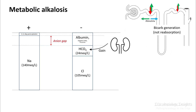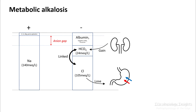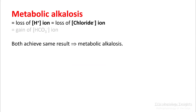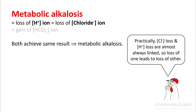Metabolic alkalosis is either gain of a bicarb or loss of chloride, and whenever your body gains a bicarb it loses the chloride and vice versa. So you can already see why your metabolic alkalosis is always hypochloremic. The other thing to remember is that loss of chloride ion is equivalent to loss of a proton. Both achieve the same results — that is metabolic alkalosis — and in the human body the chloride and proton loss are almost always linked, so loss of one leads to loss of the other.